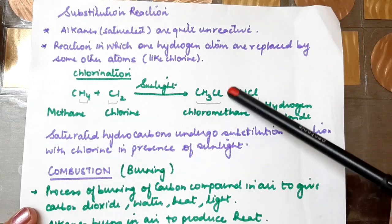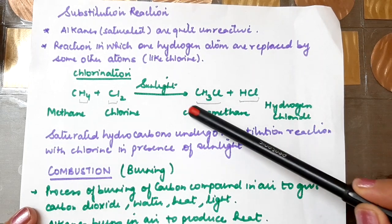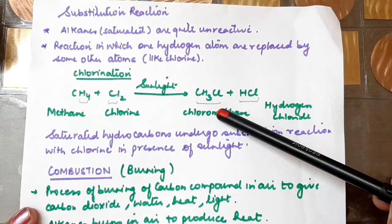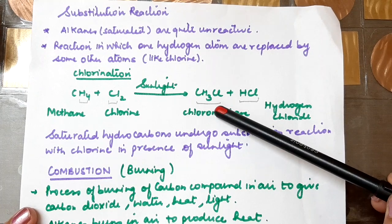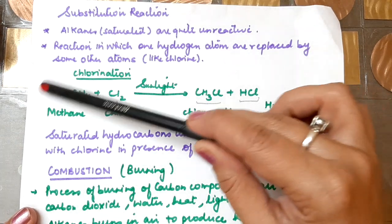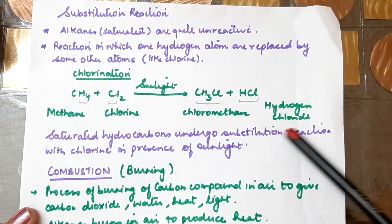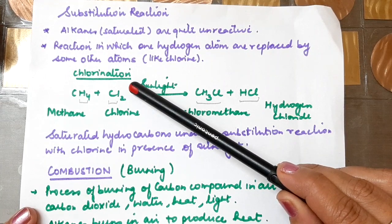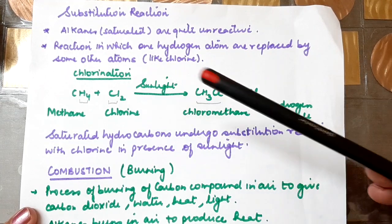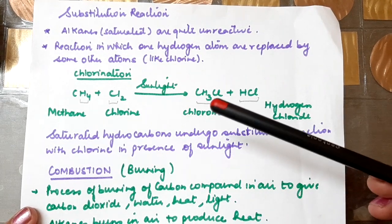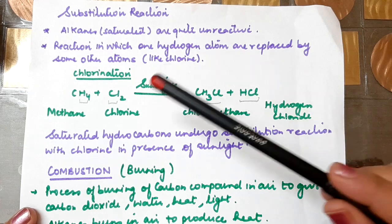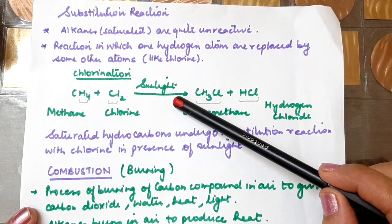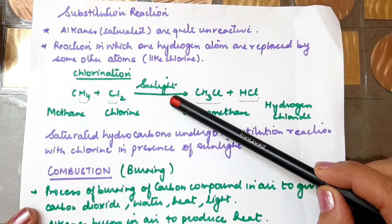CH₃Cl is chloromethane, also known as methyl chloride. This whole process is called chlorination. So saturated hydrocarbons undergo substitution reaction with chlorine in the presence of sunlight.